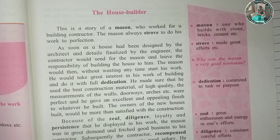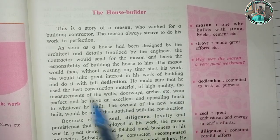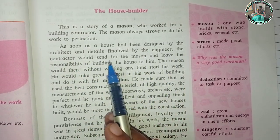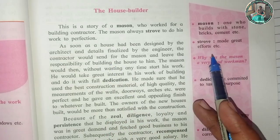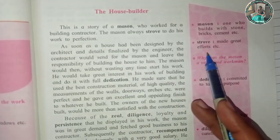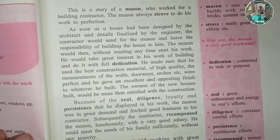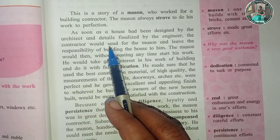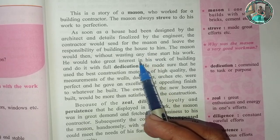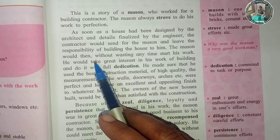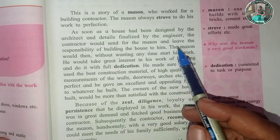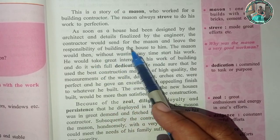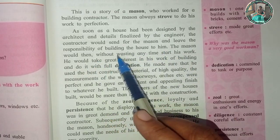This is a story of a mason. The mason worked for a building contractor. The mason always did things with perfection — he made great efforts. As a house had been designed by the architect and details finalized by the engineer, the contractor would send for the mason and leave the responsibility of building the house to him.